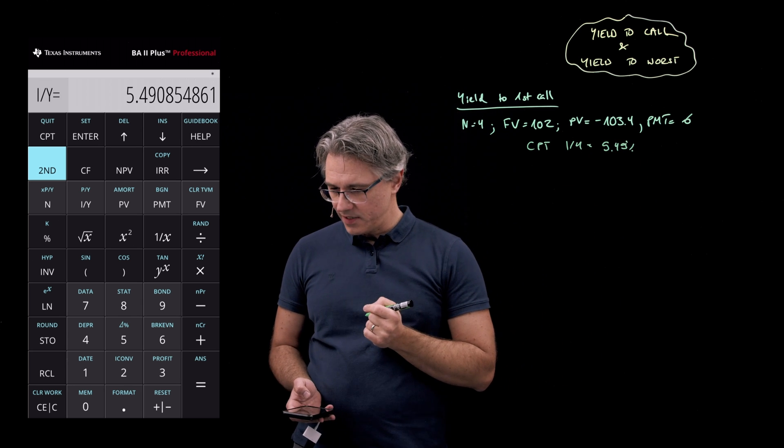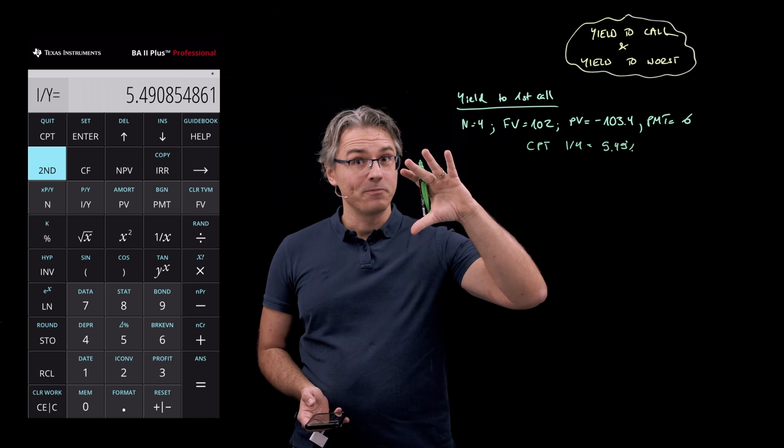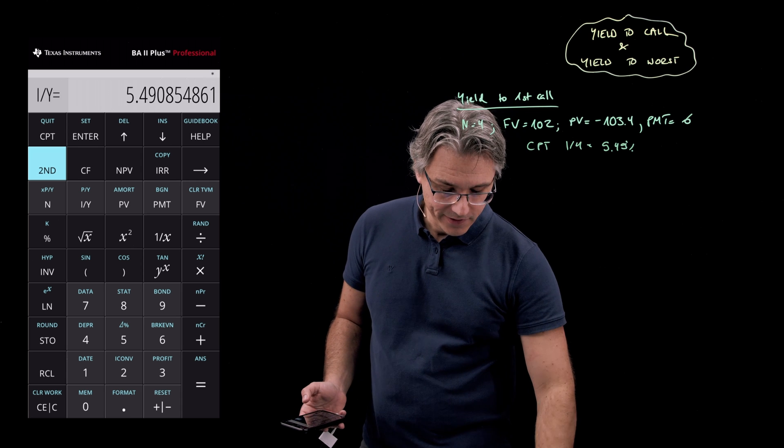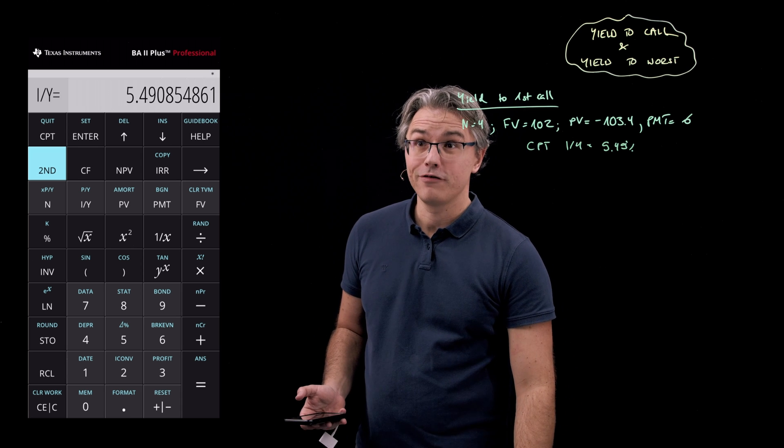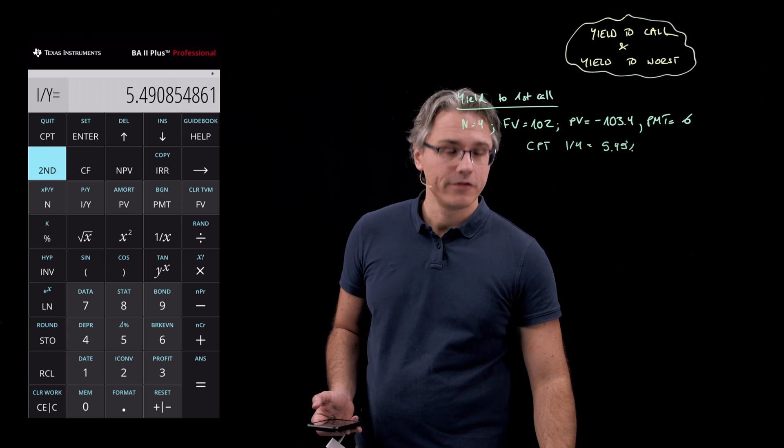CPT I over Y and this gives 5.49 percent. 5.49 percent, and this alone allows me to basically limit the choice of answers to answers A and C, which have 5.49 as the answer for yield to first call.